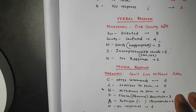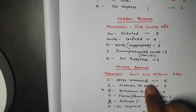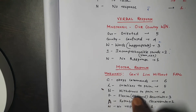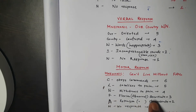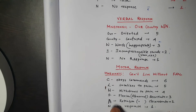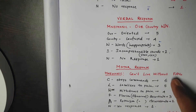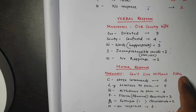The last component is Motor response. The mnemonic is 'Can't Live Without Fans' — FAN. The maximum score is 6 and the minimum score is 1. No response gives a score of 1, and the scores ascend up to 6 for the best motor response. Remember: Can't Live Without Fans, and the abbreviation FAN.